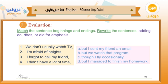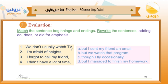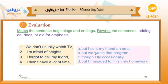Now let's move to the evaluation. Match the sentence beginnings and endings, then rewrite the sentences adding 'do,' 'does,' or 'did' for emphasis. Number one: 'We don't usually watch TV' — the correct ending is 'but we watch that program.' Rewritten with emphatic do: 'We don't usually watch TV, but we do watch that program,' to show the contrast.